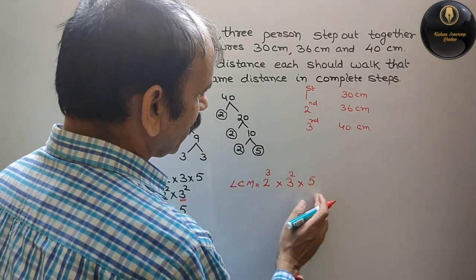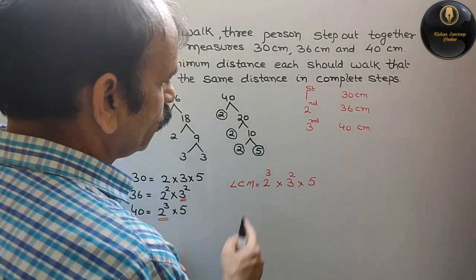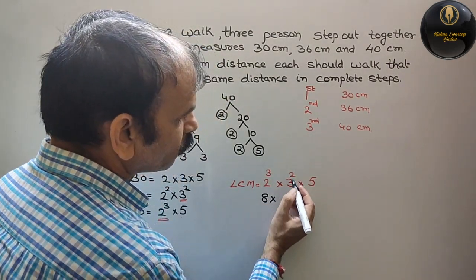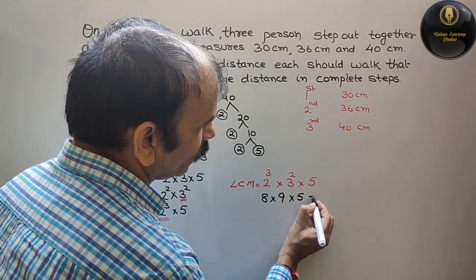This is 2 cube is 8, 3 square is 9 into 5. 8 into 5 is 40